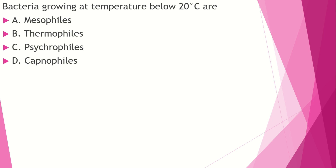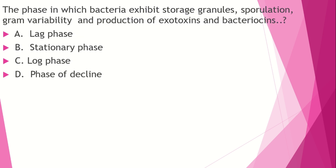The bacteria that exhibit storage granules, sporulation, ground viability, and production of exotoxins and bacteriocins. Option A: lag phase. Option B: stationary phase. Option C: log phase. Option D: phase of decline. The answer is stationary phase — bacterial growth rate equals death rate in this phase.